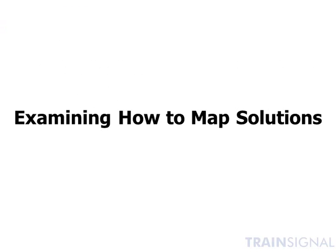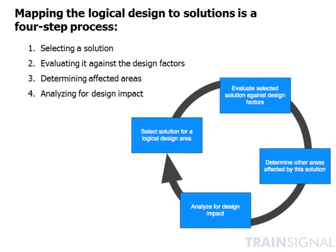With that in mind, let's take a look at the four-step process for mapping solutions onto the logical design. That four-step process involves: first, selecting a solution; second, evaluating that solution against the design factors — the risks, requirements, assumptions, and constraints; third, determining other areas affected by the solution; and fourth, analyzing for design impact.